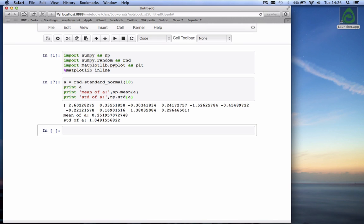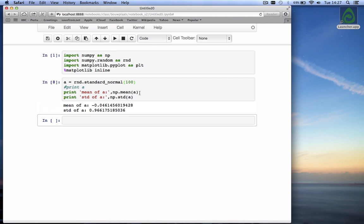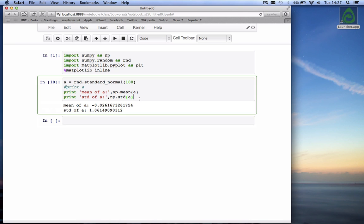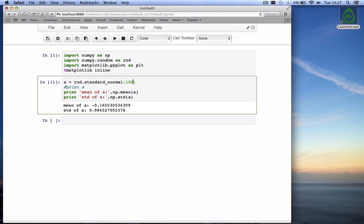But if we would draw more numbers, we would approach the underlying mean and standard deviation. So let's stop printing this to the screen and draw 100 numbers. You see now we are getting pretty close, even if we run it every time, to 0 for the mean and 1 for the standard deviation. If you do a thousand numbers, we are getting closer and closer.